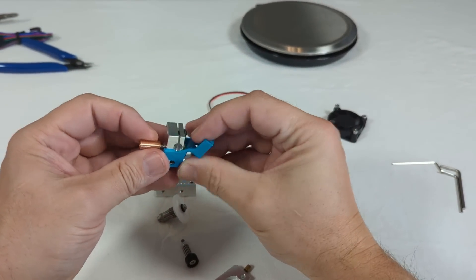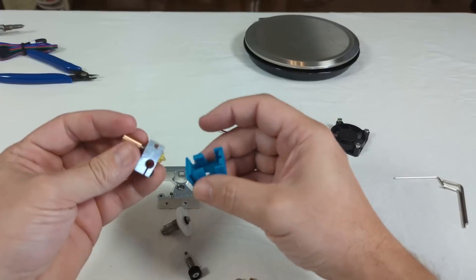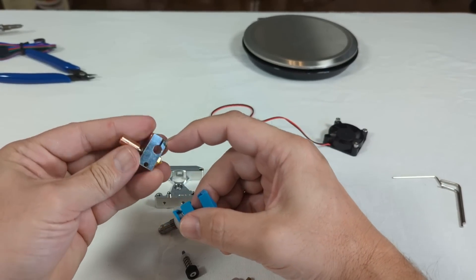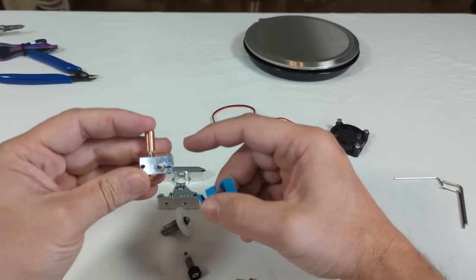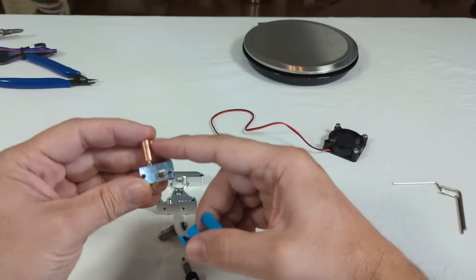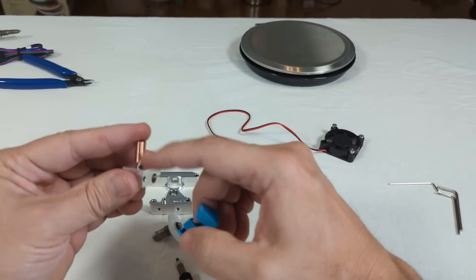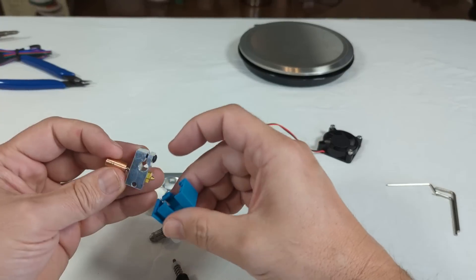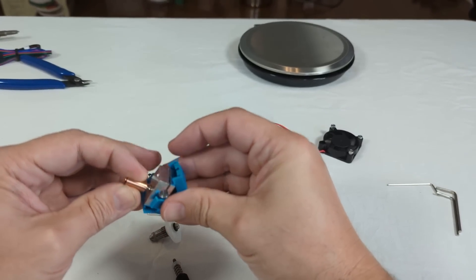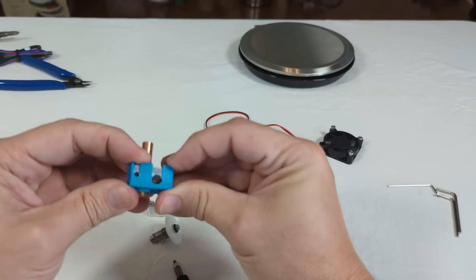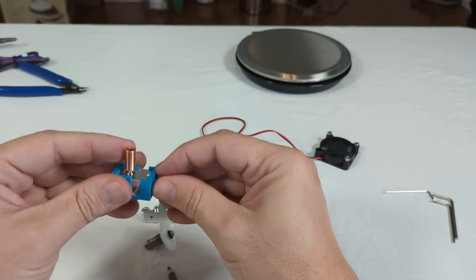Of course, this actual hot block hot end assembly here is also inferior to the Slice Engineering copperhead. So you can get a hot copperhead hot end or a hot block as well as the heatbreak throat piece. That's going to perform substantially better. It might even up your maximum extrusion to 300.